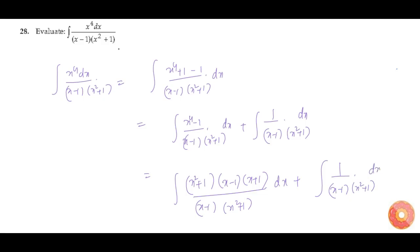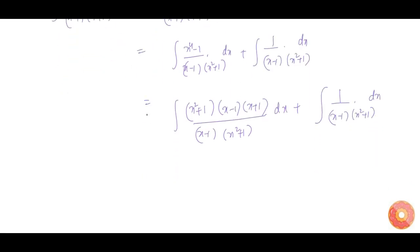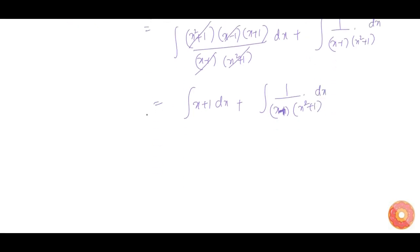Now (x squared plus 1) and (x squared plus 1) get cancelled, and (x minus 1) and (x minus 1) get cancelled, which gives us integration of (x plus 1) dx plus integration of 1 divided by (x minus 1) into (x squared plus 1) dx. Integration of (x plus 1) is equal to x squared by 2 plus x.